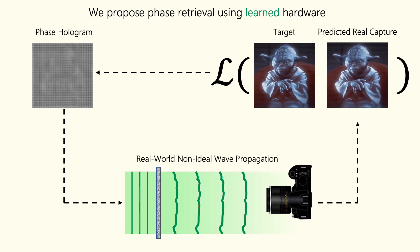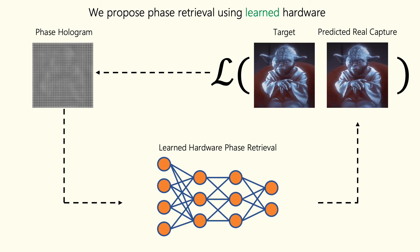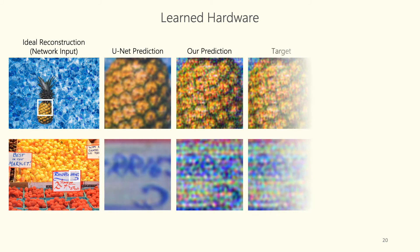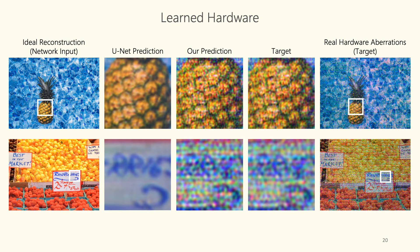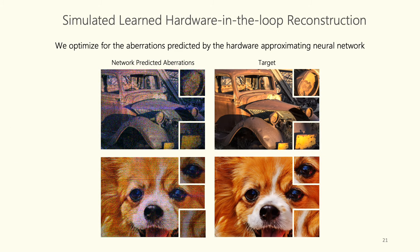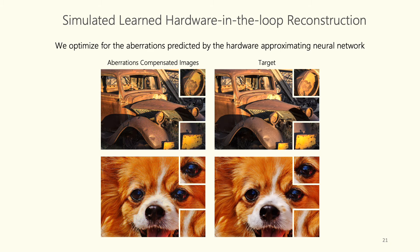To overcome all of these limitations, we propose to learn the entire real-world wave propagation in a holographic display using a deep neural network. We design a neural network architecture that allows for accurate predictions of aberrated real-world observations. Once learned, we use this learned hardware as a substitute to the real hardware to compute high-quality holograms. Our trained deep neural network can estimate the images exactly as produced by a real hardware display, and we use this to eliminate severe artifacts in holographic projections.